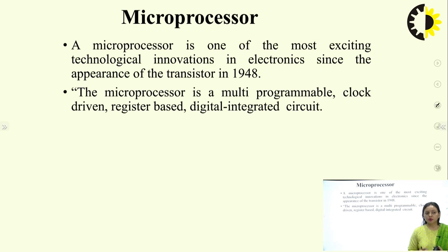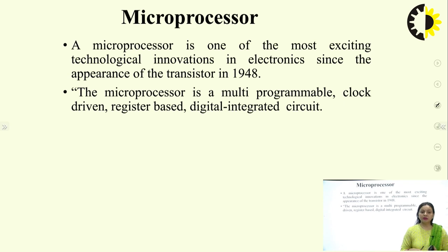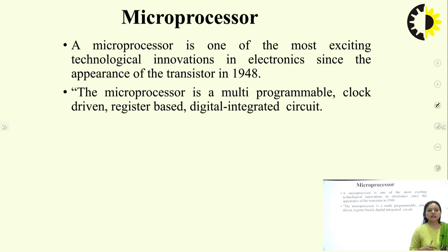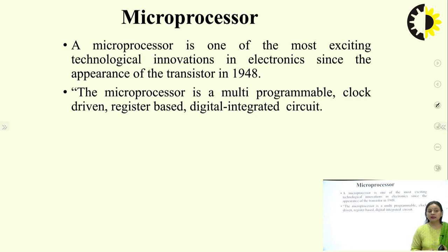Microprocessor is multiprogrammable — it can handle many programs at the same time. It is clock driven, meaning all functions are synchronized. It is register based — every processor has a set of registers which vary from processor to processor. It is a digital integrated circuit, meaning it processes digital signals. The input given to the processor must be in binary form.